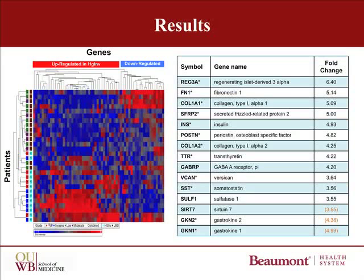This slide shows the analysis we did where we compared the less dangerous forms of IPMN — low or moderate — to those types which were more likely to become cancer, the high and invasive. In this analysis, we looked at over 23,000 different genes and found 62 different genes that were consistently different between the two groups. The left panel of the slide shows what we call a heat map, where the red areas signify genes that are more abundant or overexpressed, and the blue represents genes that are less abundant or underexpressed.